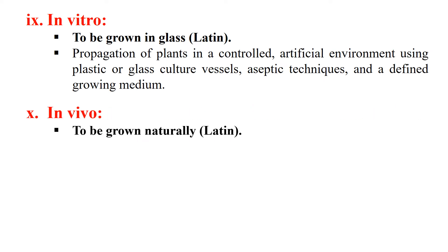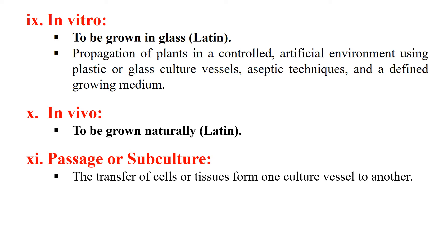In vivo means to grow in natural conditions. The next term is passaging or subculture — when a cultured organ or plant is transferred to another vessel containing fresh medium, that process is known as subculture. Subculture is done because after some time the nutrients of the medium start decreasing or become depleted, and there may also be production of toxic substances due to the metabolism of the plant cells. So after some time the plant cells need to be transferred into fresh medium, and that process is known as subculturing.